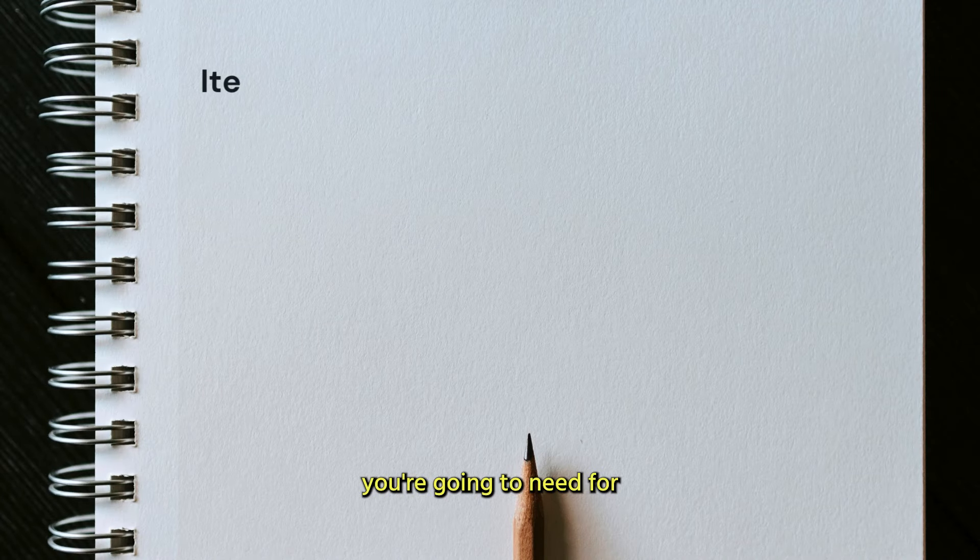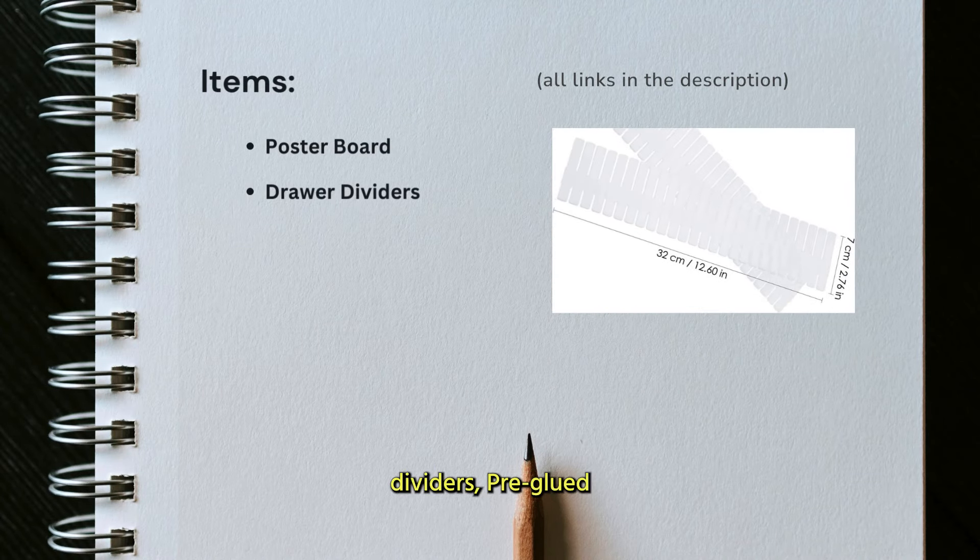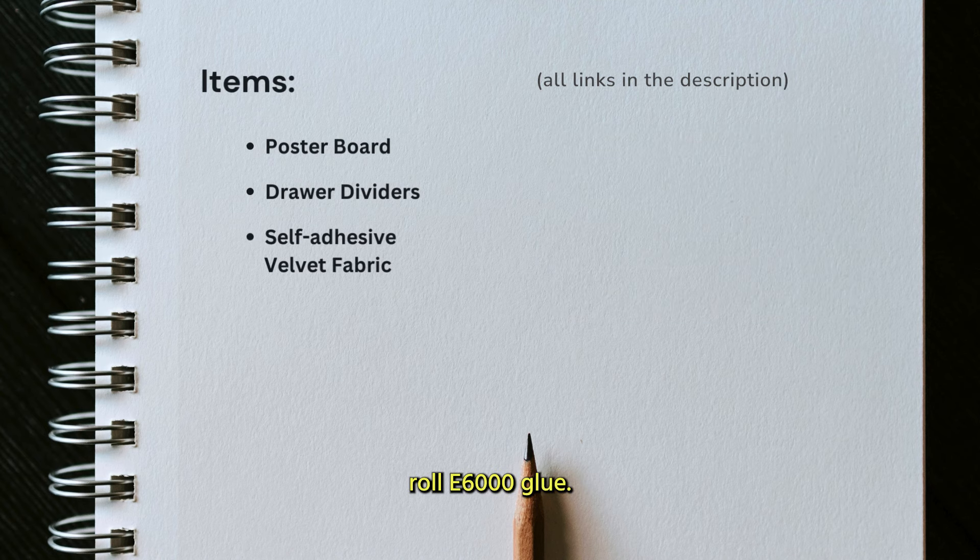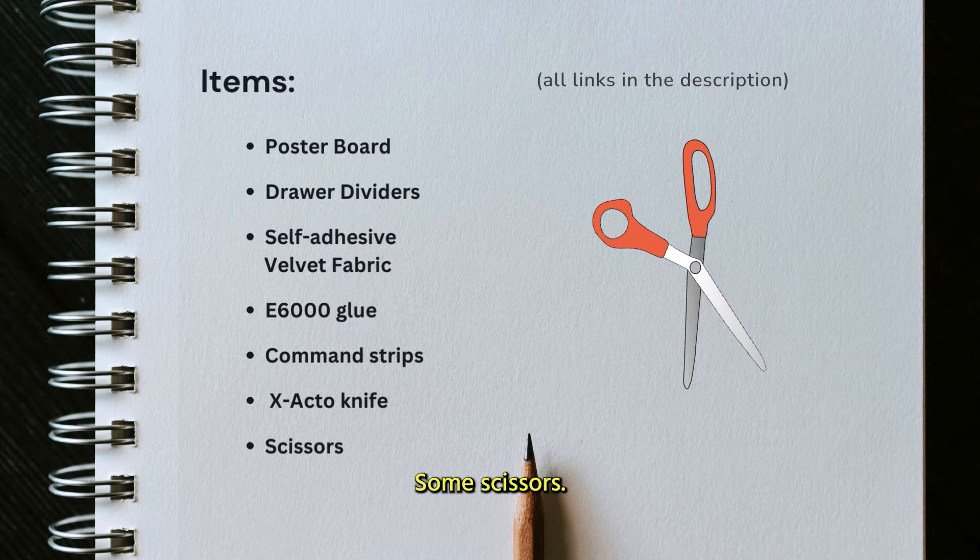So the items you're going to need for this project are a poster board, some drawer dividers, pre-glued velvet fabric roll, E6000 glue, command strips, an exacto knife, some scissors, and tweezers.